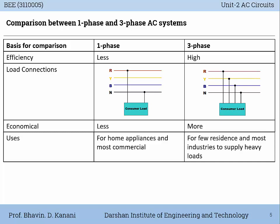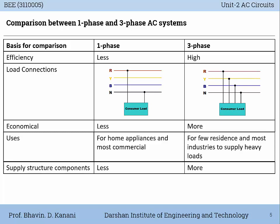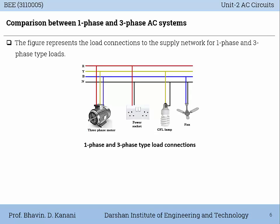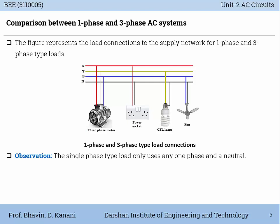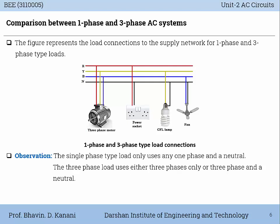Single-phase system is mostly used in home appliances and for commercial purposes. Three-phase system is used in few residences but is mostly used in industries to supply heavy loads. The supply structure components are fewer in single-phase systems compared to three-phase. Single-phase type load uses any one phase and a neutral, whereas three-phase load uses either three phases only, or three phases and a neutral. Three-phase type load is comparatively higher consumption loads.